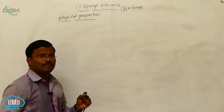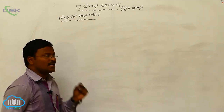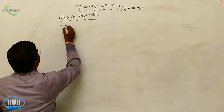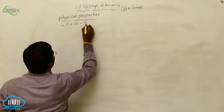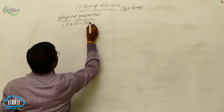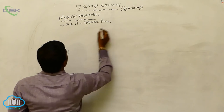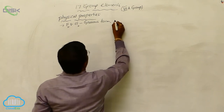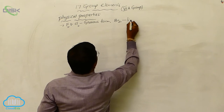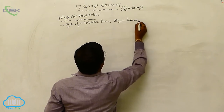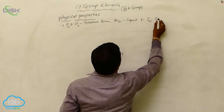Bromine is available in liquid form and iodine is a solid. Fluorine and chlorine are available in gaseous form, whereas bromine is in liquid form and iodine is in solid form.